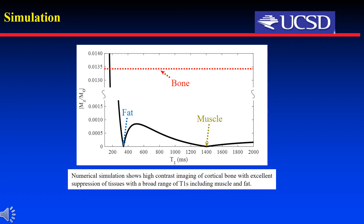As can be seen from the simulations, both fat and muscle signals are nulled. Long T2 tissues with T1s below or above bone T1 are also well suppressed, suggesting that the DIR preparation can provide efficient long T2 suppression with reduced T1 dependency.